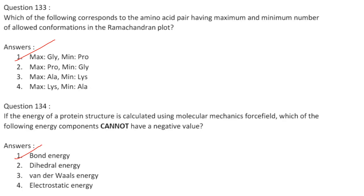The amino acid pair having maximum and minimum number of allowed conformations in the Ramachandran plot: maximum is glycine and minimum is proline. Answer is option 1.